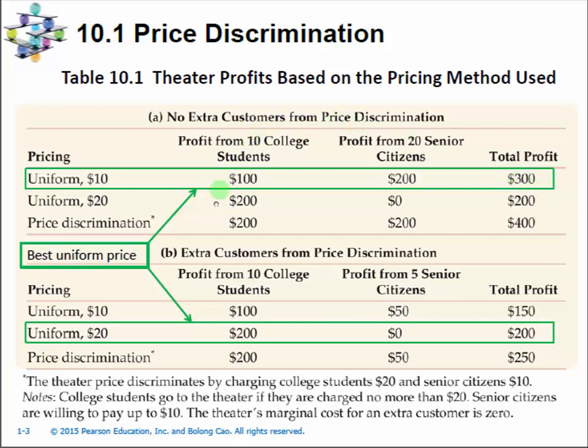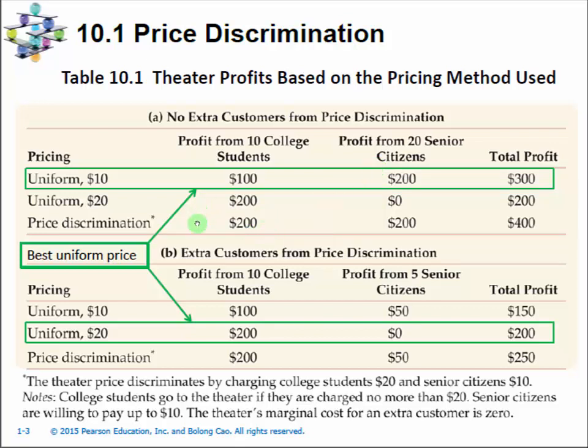However, if you can identify different consumer groups — having senior citizens show their driver's license — then you charge seniors $10 and college students $20. It's hard for college students to pretend to be senior citizens, especially from their looks. From the 10 college students, we charge $20 per ticket and receive $200.